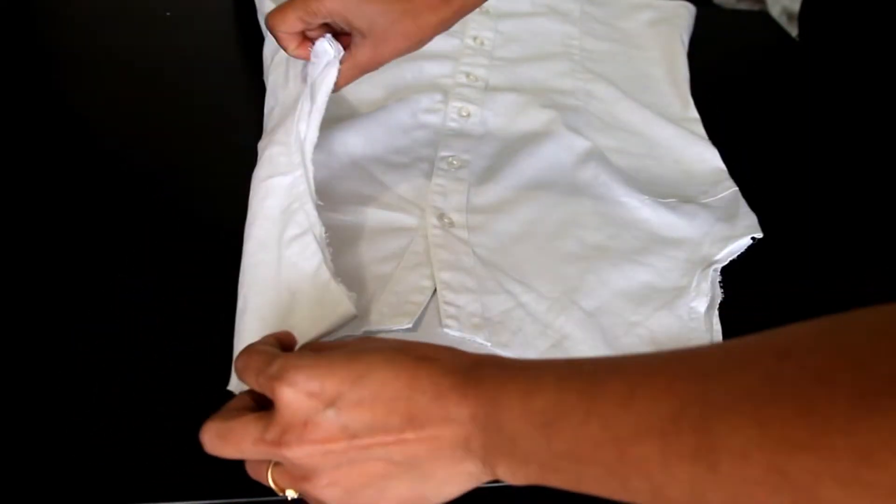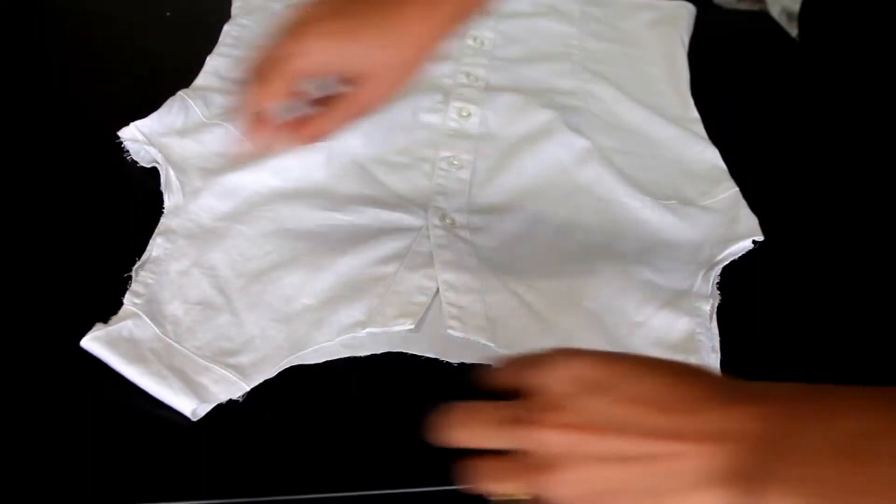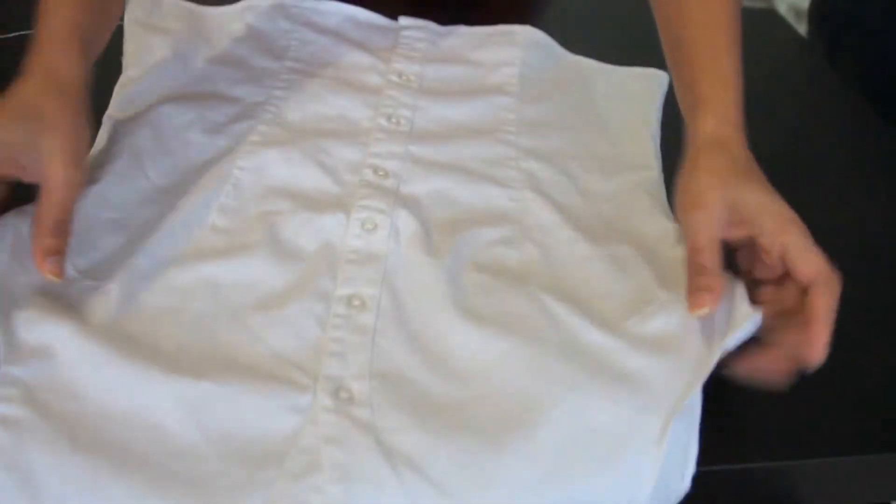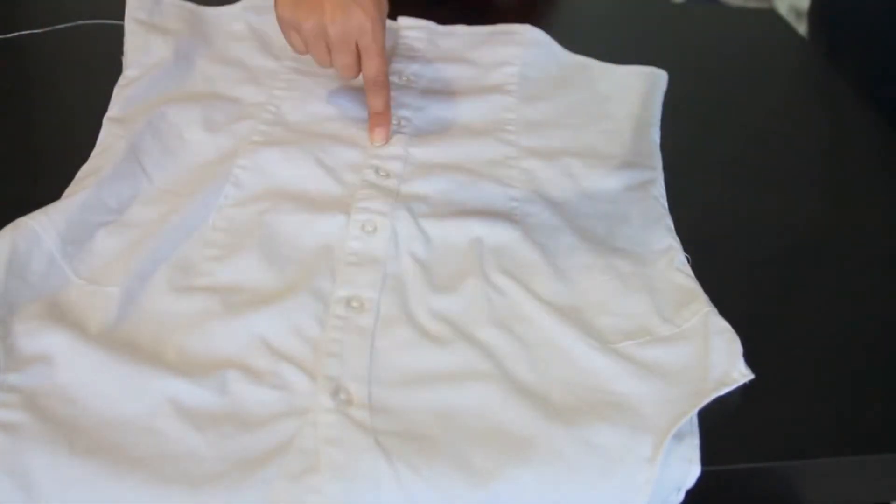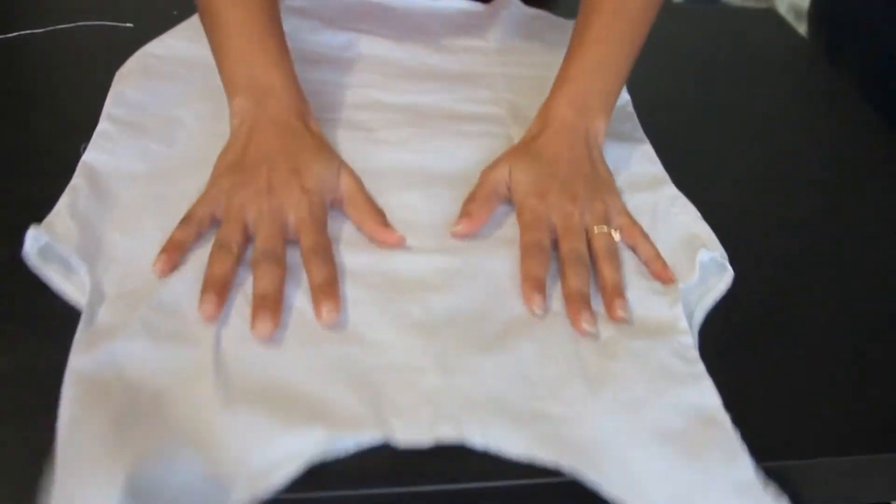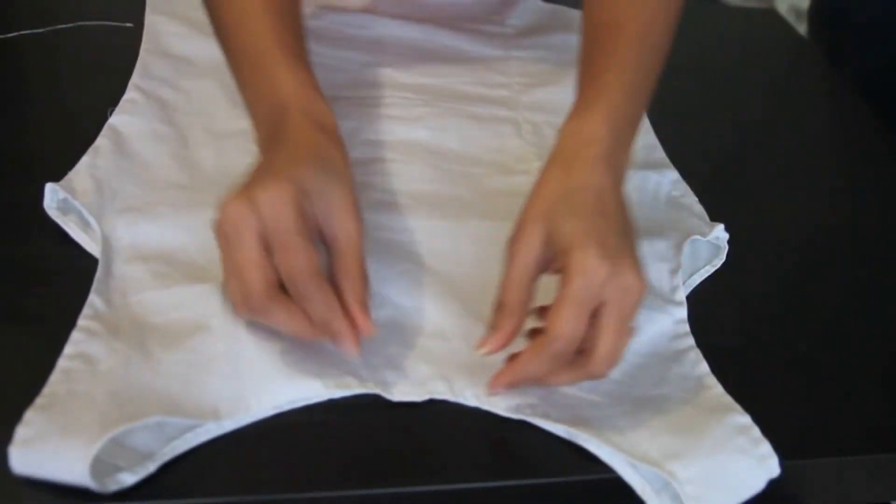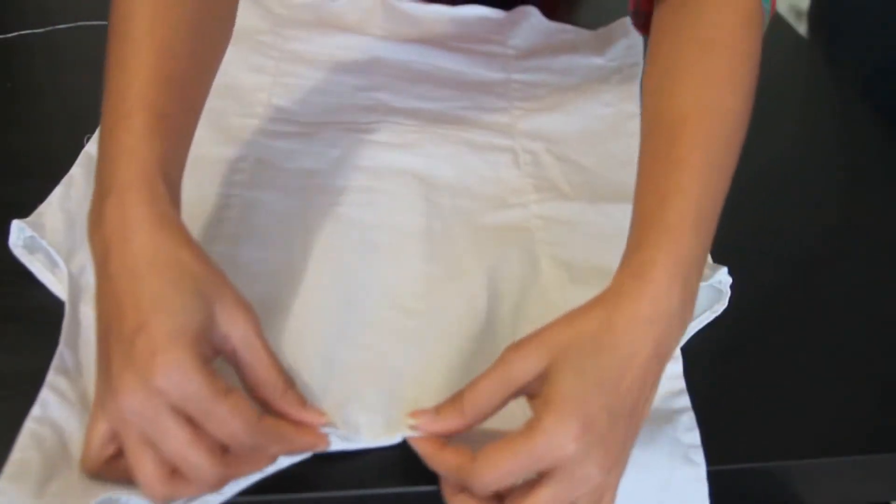Now let's hem our neck and the sleeves. The back side of the shirt actually becomes the front of the top. I'm just going to give a little crease here at the top of the neck so that it gets a little better shape, a nice crease here.